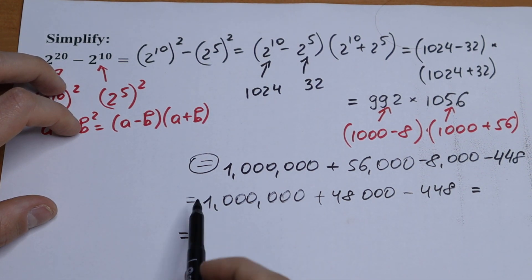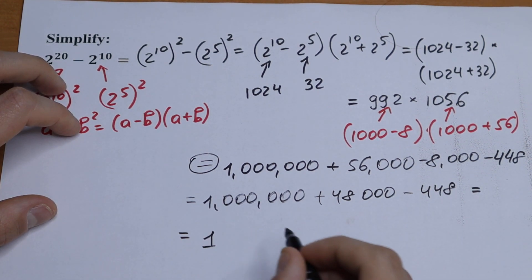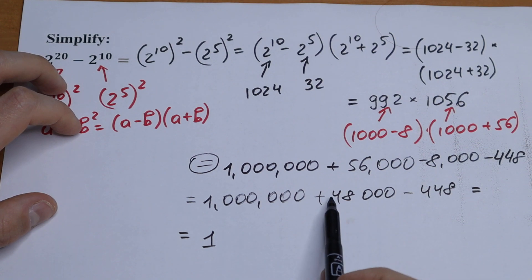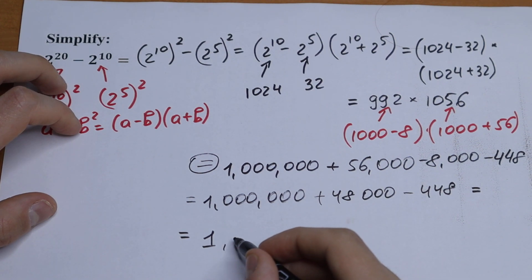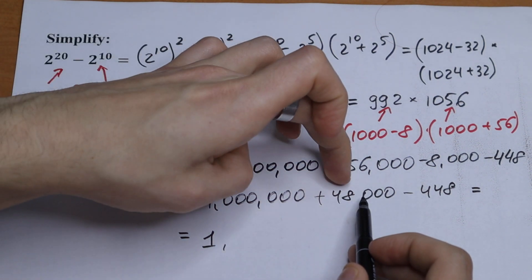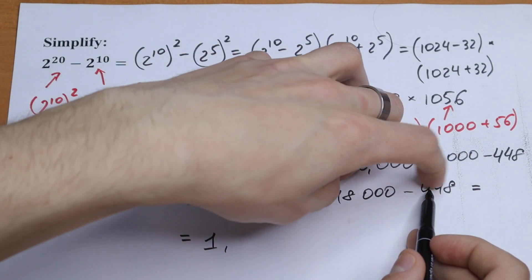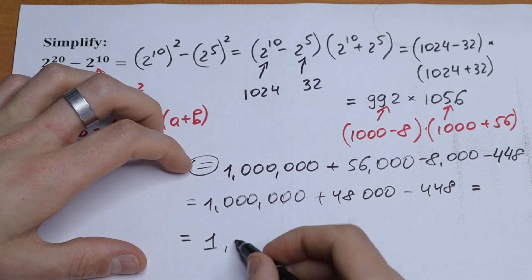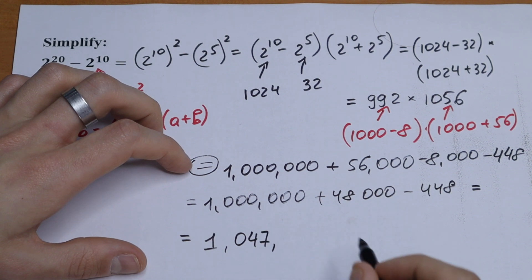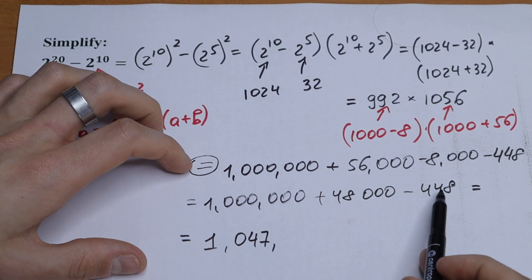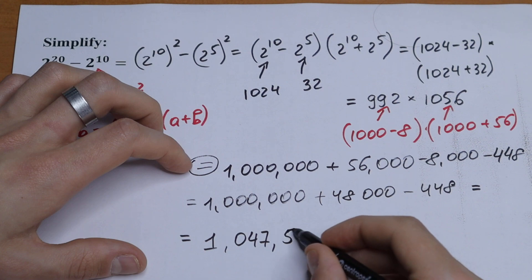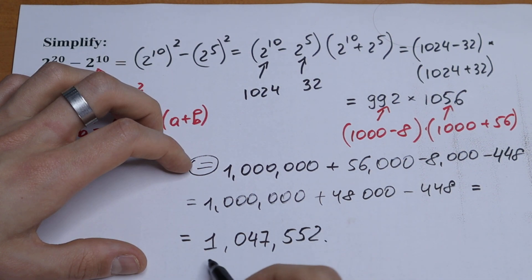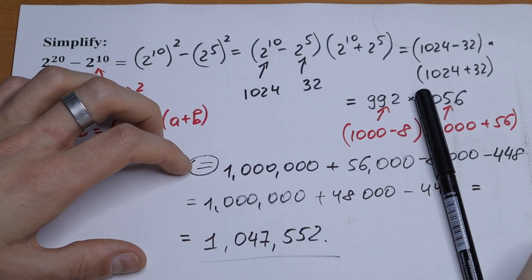So as a result, we will have first of all 1 million. If we're talking about thousands, we will have 48 thousand. But we have 48 thousand minus 448, so we will have not 48 but 47 thousand. And 1000 minus 448 will be 552. This will be our answer.